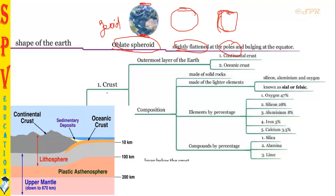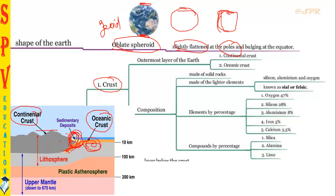Now we shall see the different layers of the Earth in detail. The first part — the topmost layer — is called the crust. The Earth has two types: continental crust and ocean crust. Continental crust floats on the ocean crust because the ocean crust is much denser than the continental crust. Between the continental crust and ocean crust, there lies a sedimentary deposit, because the particles in the continental crust slowly move onto the ocean floor.